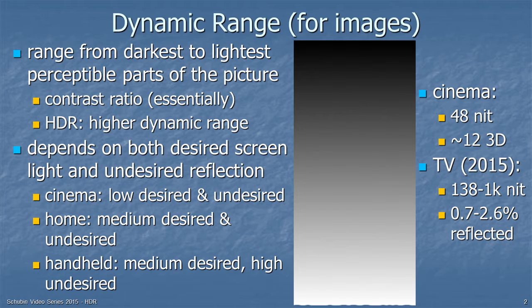The dynamic range depends on both the desired screen light — how much brightness you can put onto the screen — and the undesired reflections. In a cinema, we have very low desired light but also extremely low undesired light. It's a very dark room, and the standard for brightness in cinema is 48 nits — a nit being a candela per meter squared.